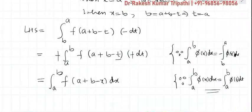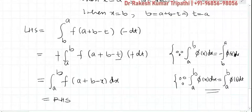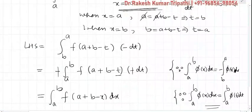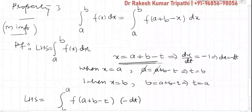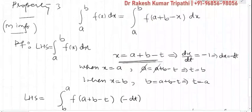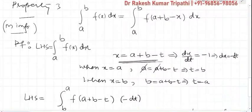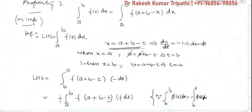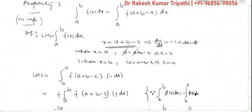And this result is the same as the right hand side. So this property is proved: integral from a to b of f(x) dx = integral from a to b of f(a + b − x) dx. This is the most important property of the definite integral.